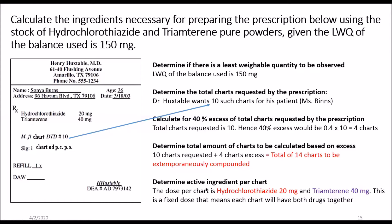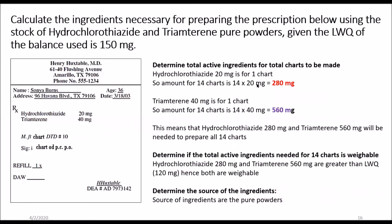We determine the active ingredient per chart: hydrochlorothiazide 20 milligrams and triamterene 40 milligrams. We also need the total amount for all 14 charts: 20 mg × 14 = 280 mg of hydrochlorothiazide, and 40 mg × 14 = 560 mg of triamterene. So to compound 14 charts we need 280 milligrams of pure hydrochlorothiazide powder and 560 milligrams of triamterene.